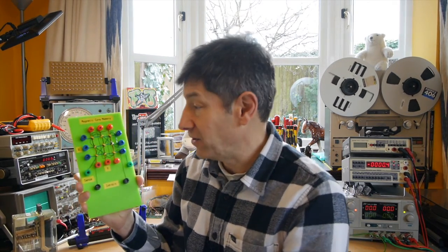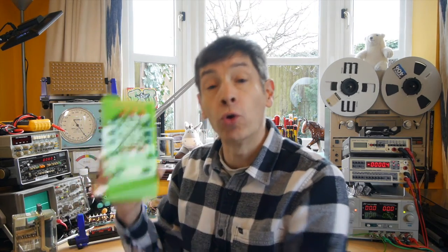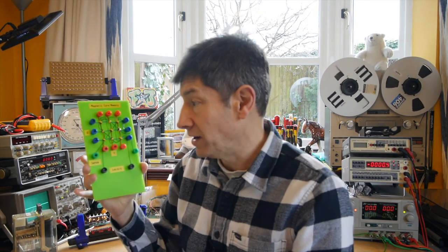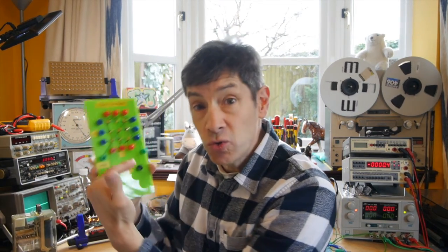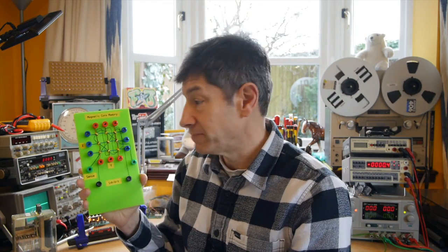And the other half of the current that will be needed to take it up to the full value that will cause the core to magnetize is passed 90 degrees in this direction. And where those two currents meet, you will get twice the strength of magnetic field, and therefore you'll be able to magnetize the core at the intersection of those two wires.